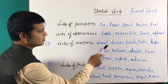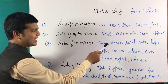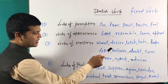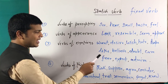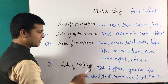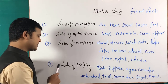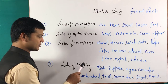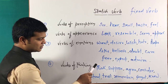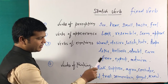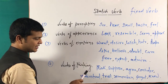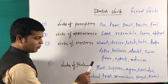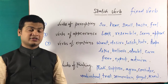Category 3: Verbs of emotions — want, desire, wish, hate, hope, like, believe, doubt, care, feel, expect, admire. Category 4: Verbs of thinking — think, suppose, agree, consider, understand, trust, remember, forget, know.